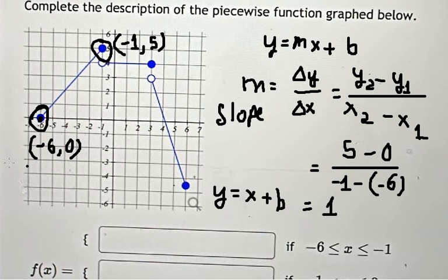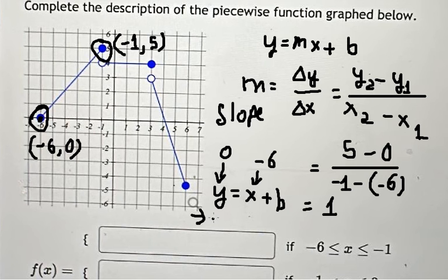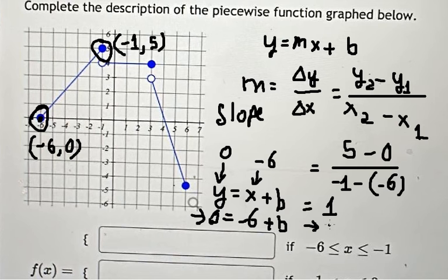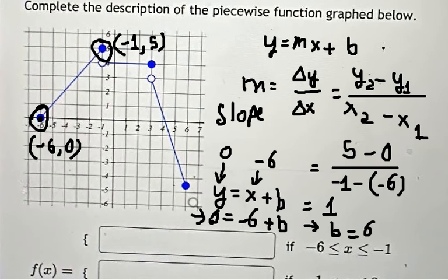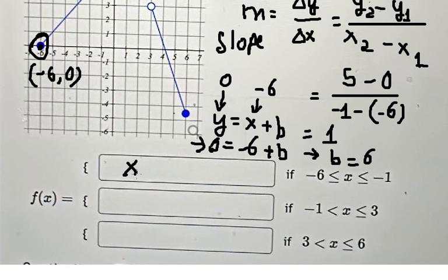Now I'll select the point (-6, 0) to find b. Substituting x = negative six and y = zero into y = x + b gives b = 6. So the final answer for this piece is y = x + 6.